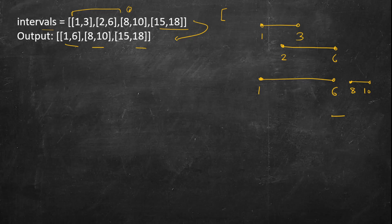The approach: it is very convenient if the intervals are sorted in ascending order of their start time, because it makes processing very natural. Just like we as humans processed it — we saw [1,3], then the next interval starts after that, and so on. If sorted by start time, we can easily compare with the previous interval and determine whether there is overlap.